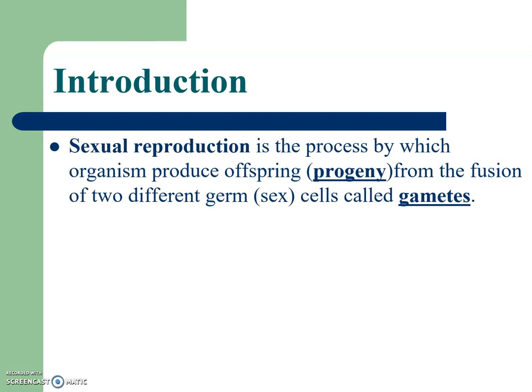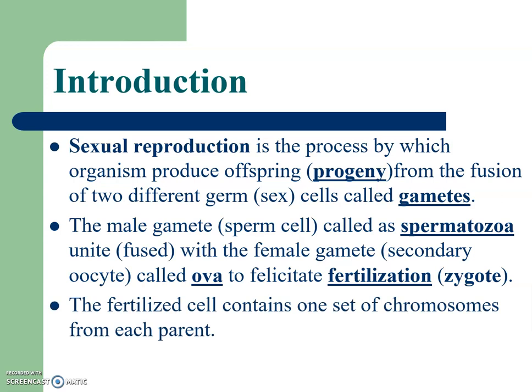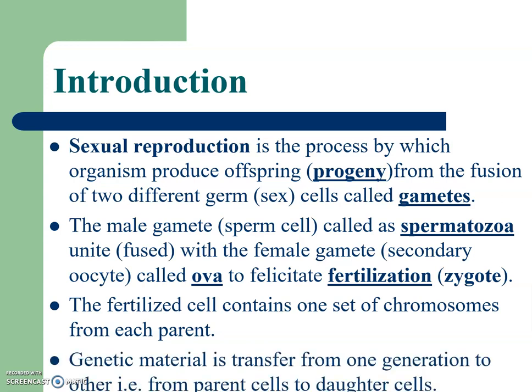Introduction: Sexual reproduction is a process by which organisms produce offspring from the fusion of two different cells called gametes. Producing offspring is also called progeny. The male gamete and female gamete unite or fuse to form a zygote, facilitating fertilization. The male gamete is called spermatozoa whereas the female gamete is called ovum. The fertilized cell contains one set of chromosomes from each parent, and genetic material is transferred from one generation to another, from parent cells to daughter cells.